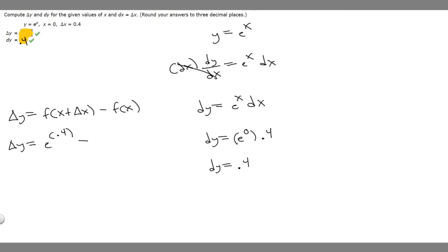Then we minus e to the x with respect to x, so 0. So it's going to be e to the 0.4 minus e to the 0, which is just 1.